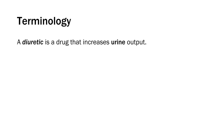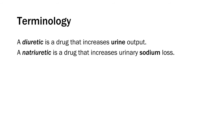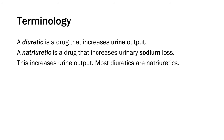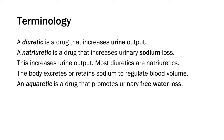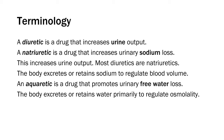Some quick terminology. A diuretic is a drug that increases urine output. A natriuretic is a drug that increases urinary sodium loss — sometimes called saluretics in the past. Sodium excretion increases urine output and this is how most diuretics work. The body excretes or retains sodium to regulate blood volume. An aquaretic is a drug that promotes urinary free water loss. The body excretes or retains water primarily to regulate osmolality. We typically use diuretics because due to some pathological process such as heart failure, a patient's body has mounted an inappropriate neurohormonal response, leading to a state of volume overload.